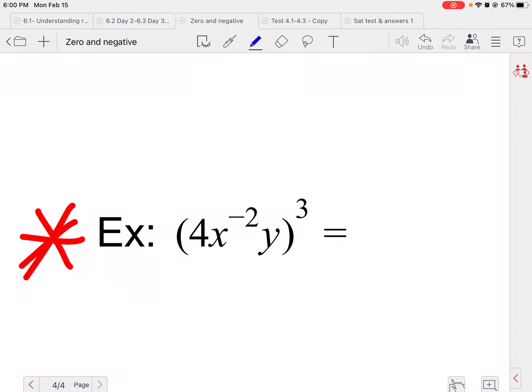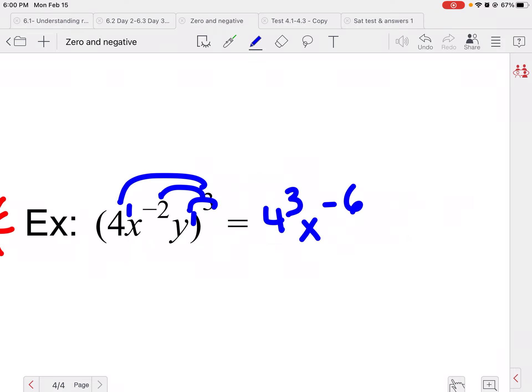Why don't you go ahead and try this one? And we can leave it in exponent form. So this would be... three needs to distribute to every single piece. Remember the four has a one and the y has a one exponent. So this would be four to the third, x to the negative six, y to the third.